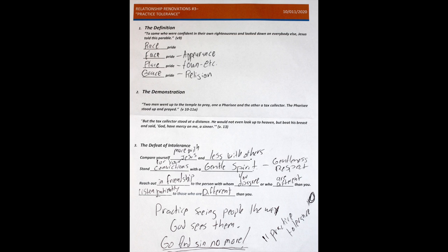Second part: stand for your convictions with a gentle spirit, gentleness and respect. When you stand up for your Christian values and what you believe, not only what you're supposed to stand up for, but how you're supposed to do it - do it with a gentle spirit. Because even though we have the truth on our side, if you don't show it with a gentle spirit and respect, people aren't going to really care for the most part.